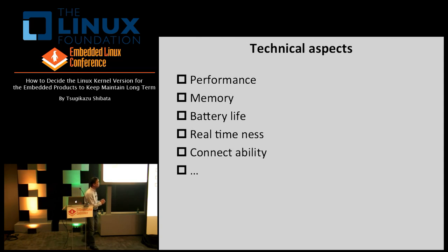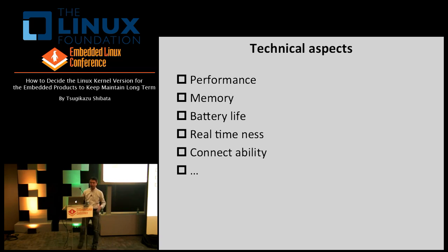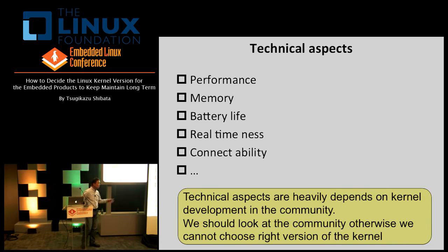First one is the technical one. There are lots of technical aspects: performance, how many CPUs and cores we use, how the kernel should be tuned, how much memory we will use. And also battery life — we have a number of technologies for reducing and expanding battery life — and real-time and network connectivity. Considering these aspects is always heavily depending on kernel development in the community, so we should look at the community. Otherwise, we cannot choose the right kernel version.